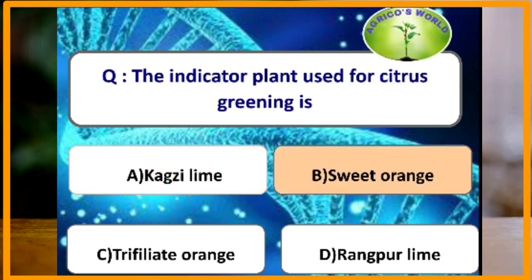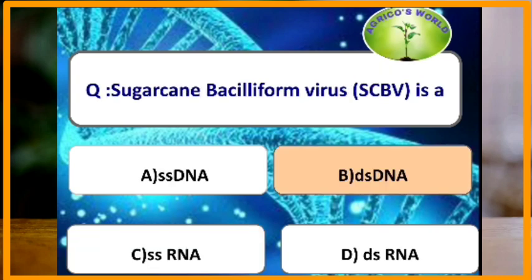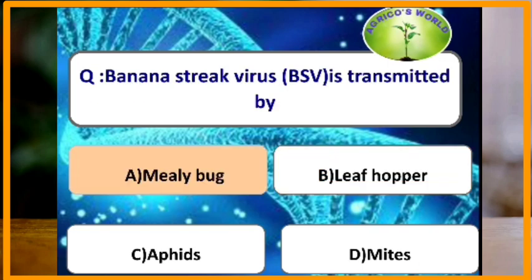The indicator plant for citrus greening is sweet orange. The indicator plant used for citrus exocortis viroid is trifoliate orange. Sugarcane bacilliform virus is a double-stranded DNA virus.